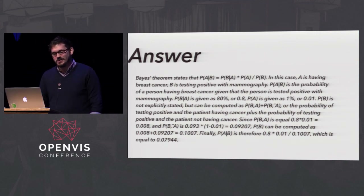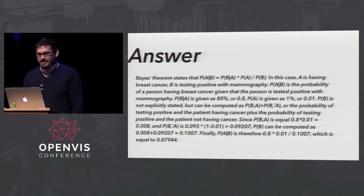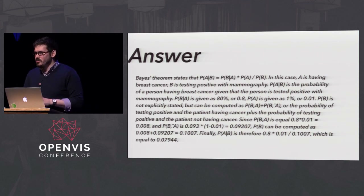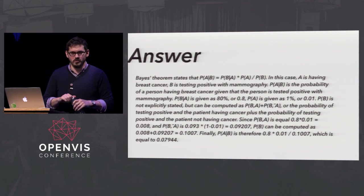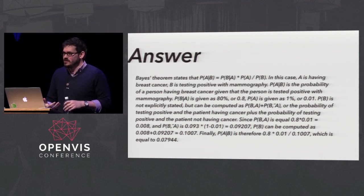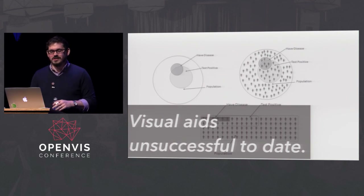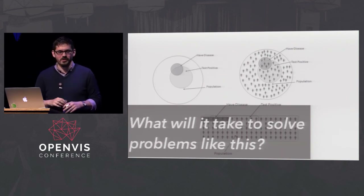The true percentage risk is about eight percent. For years people have been studying this since the 80s - Gigerenzer was studying this then. Visualization people thought visualization would come in and save the day: use a Venn diagram, maybe some icon arrays. But we know from previous research that these approaches are absolutely unsuccessful - accuracy rates still hover between six and 45 percent. What would it take to solve a problem like this, one that has real social impact?